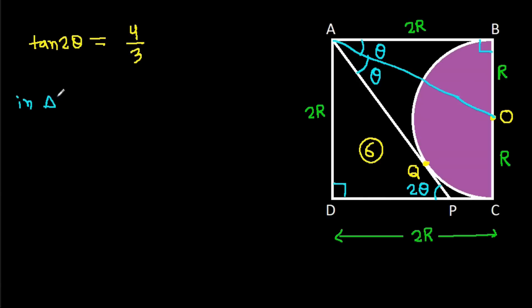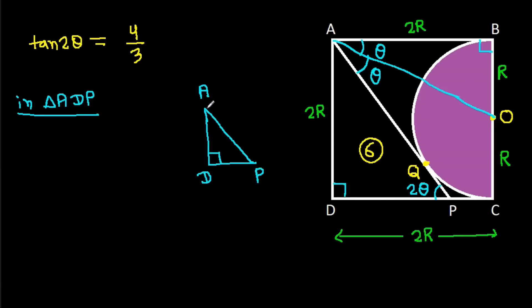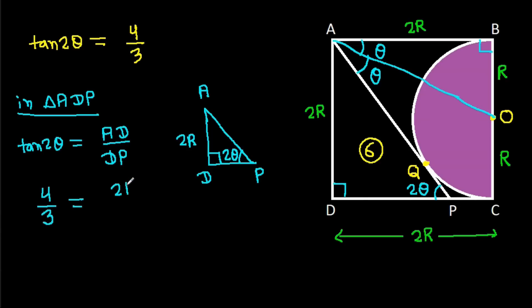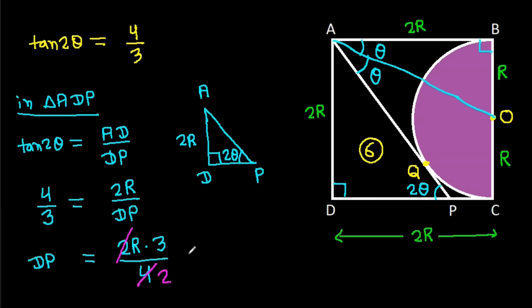In triangle ADP, the interior angle at D is 90 degrees. AD is 2R, and this angle at A is 2 theta. So tan 2theta = AD over DP — wait, it is DP over AD. So DP = AD times (3/4) when using tan 2theta = 4/3... rearranging: DP = 2R times (3/4) = 3R/2. We get DP = 3R/2.